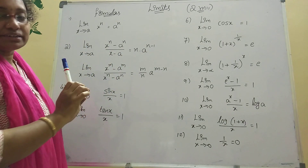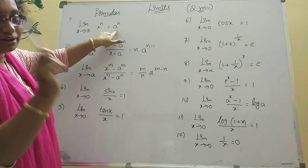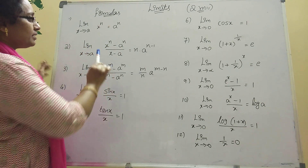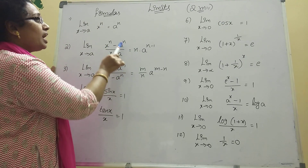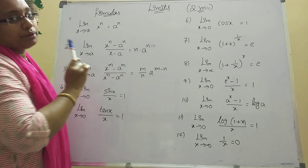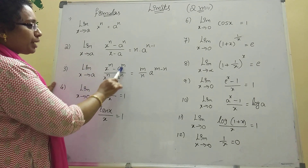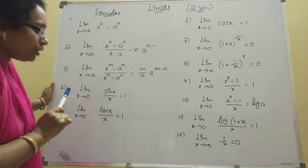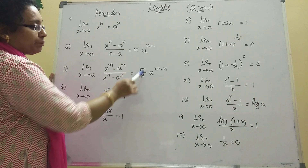Here x tends to a, so in that x position you substitute a. Remember: x power n minus a power n by x minus a — same base in numerator and denominator, then n into constant power. Next, Formula 3: limit x tends to a, x power m minus a power m divided by x power n minus a power n equals m by n into a power m minus n.